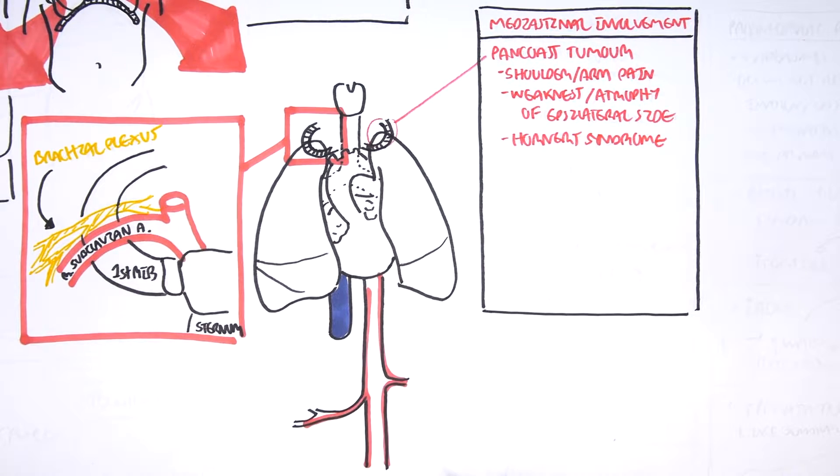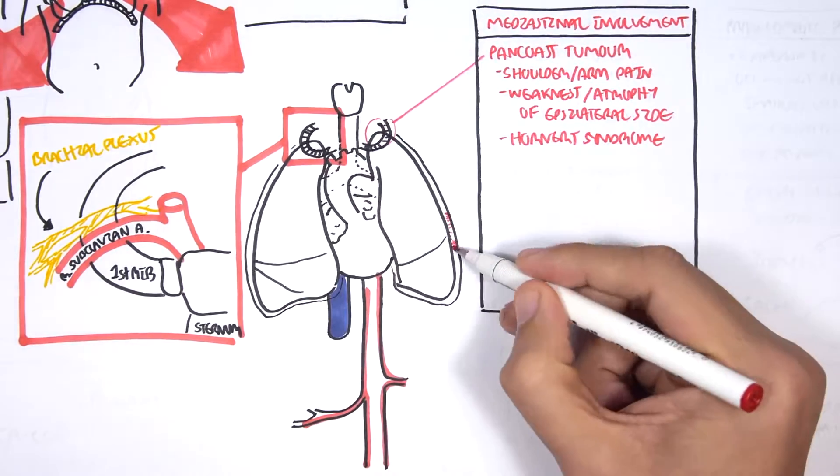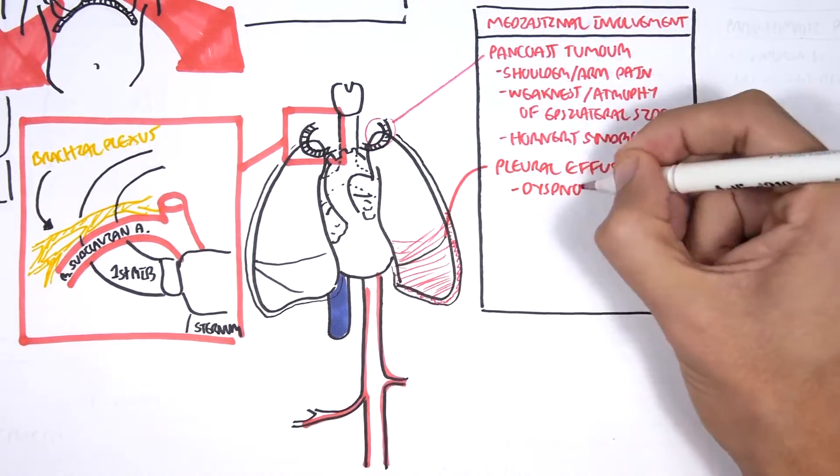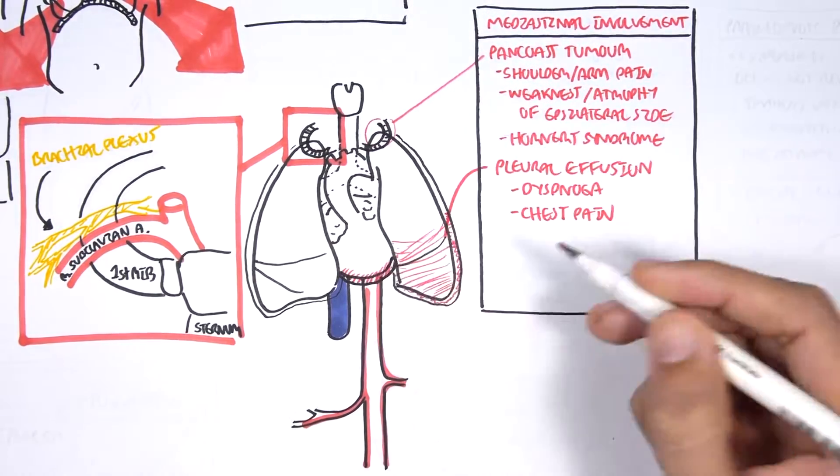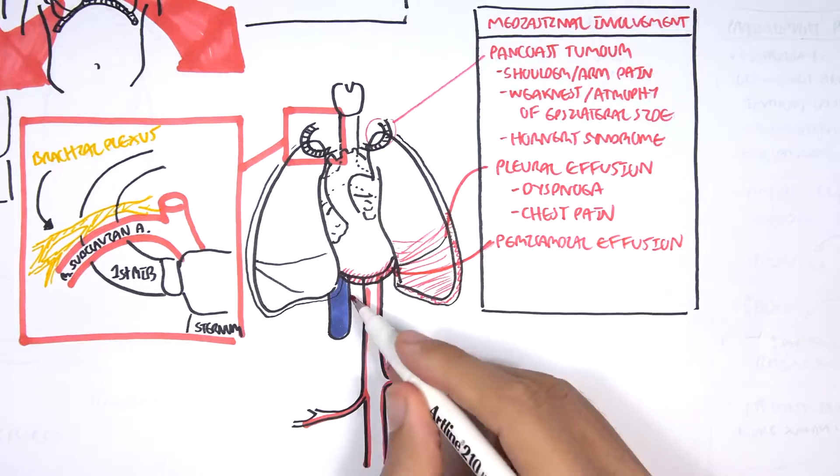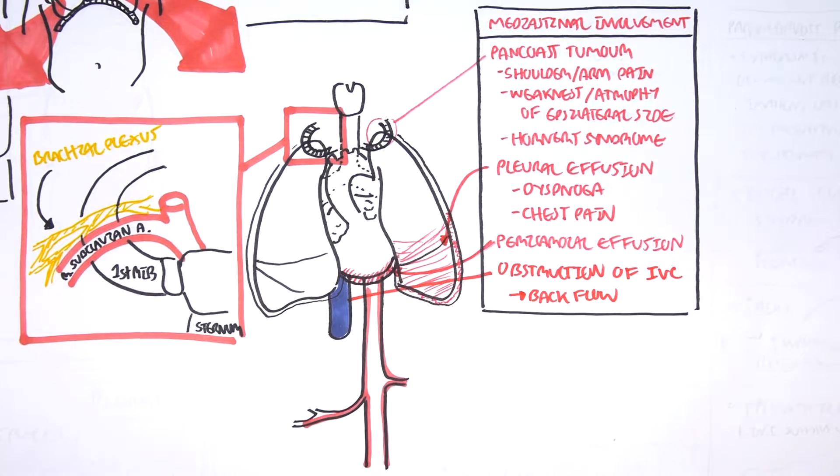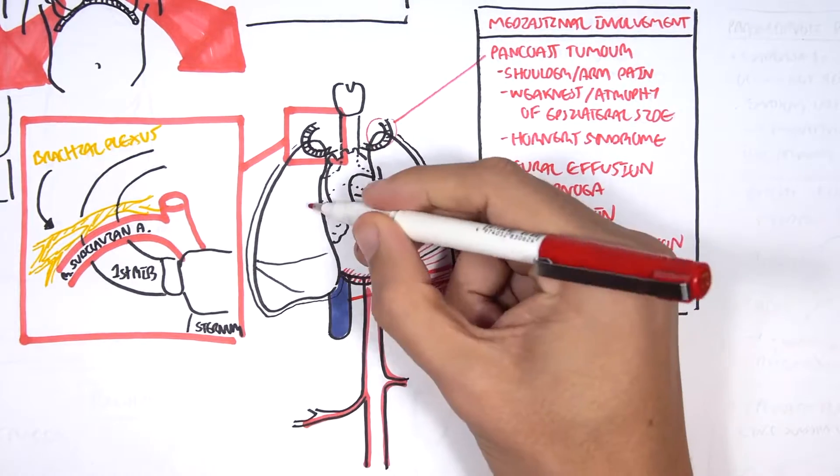Apical lung tumors can also block the sympathetic nerve fiber around this area, causing what's known clinically as Horner's syndrome. Another mediastinal involvement is pleural effusion, which causes dyspnea as well as chest pain. There can also be heart involvement causing pericardial effusion. Another important structure that can be affected is the superior vena cava, which when blocked can cause the vena cava syndrome. So those were some mediastinal involvement associated with lung cancer growth.